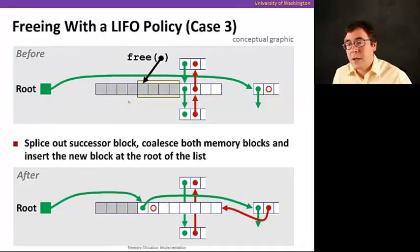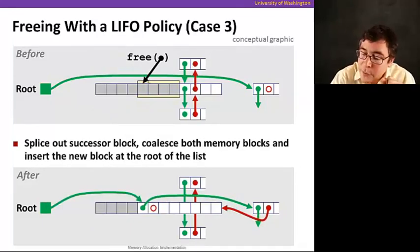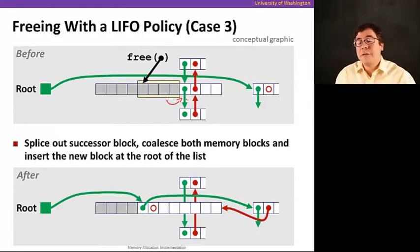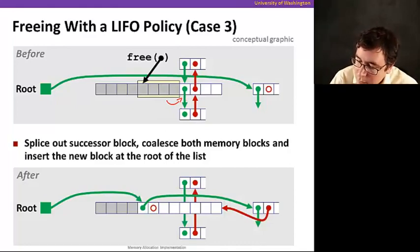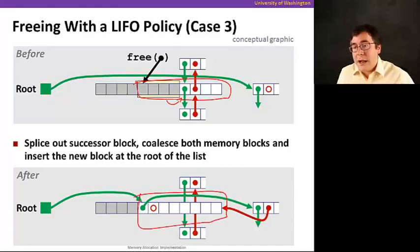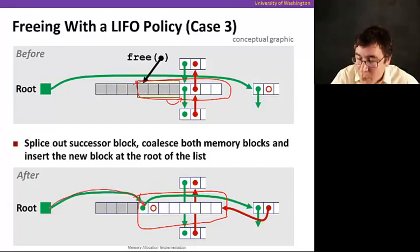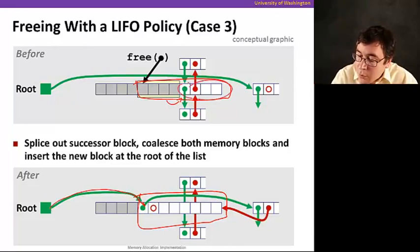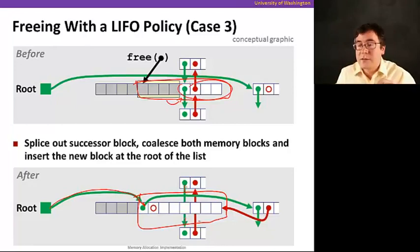The third case is when we free a block and right after it there's a free block. We do the same as before — we merge them into a larger block. We update the links so the root now points to this newly formed larger block, and we remove the old block since it's now part of the larger one, updating all pointers accordingly.